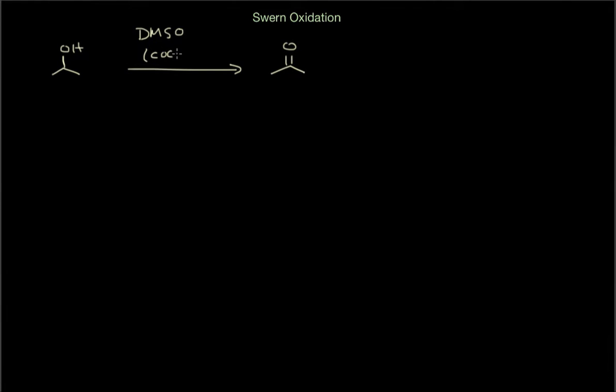So this is COCl2, it's a dimer. We're going to go over the structure in a couple of seconds in presence of a base which most of the time is triethylamine. We typically use dichloromethane as the solvent and it's at minus 78 degrees, so it's a very mild reaction condition.